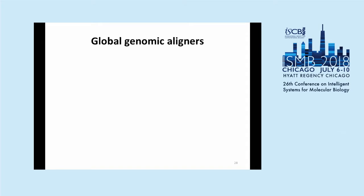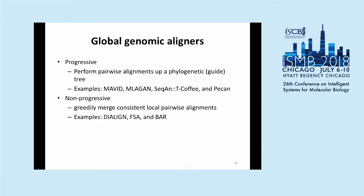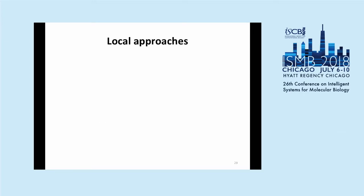After a homology map is constructed, we have to construct nucleotide-level alignments. There are a variety of global genomic aligners, generally classified as progressive — using a tree to guide the alignment — or non-progressive, which tend to take a greedy strategy of merging consistent local pairwise alignments to form a multiple alignment. One of the oldest and most widely used local approach packages is MUMMER, a pairwise whole genome alignment method mostly designed for prokaryotic-sized genomes but usable for larger genomes. It identifies local exact matches via suffix array or tree, followed by a chaining step via a variant of the Smith-Waterman algorithm.